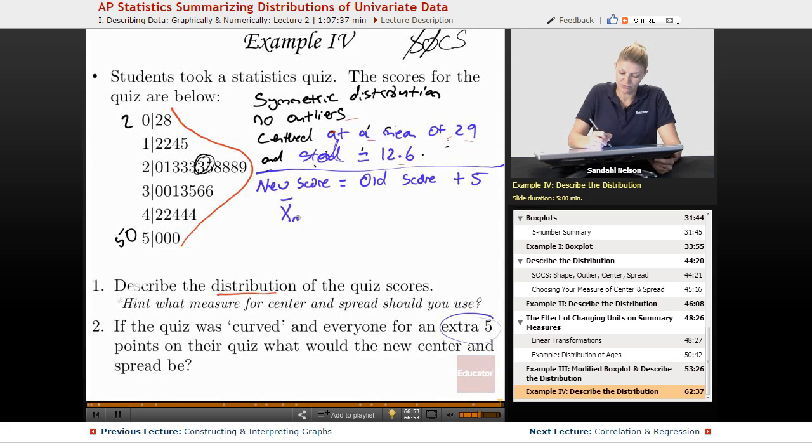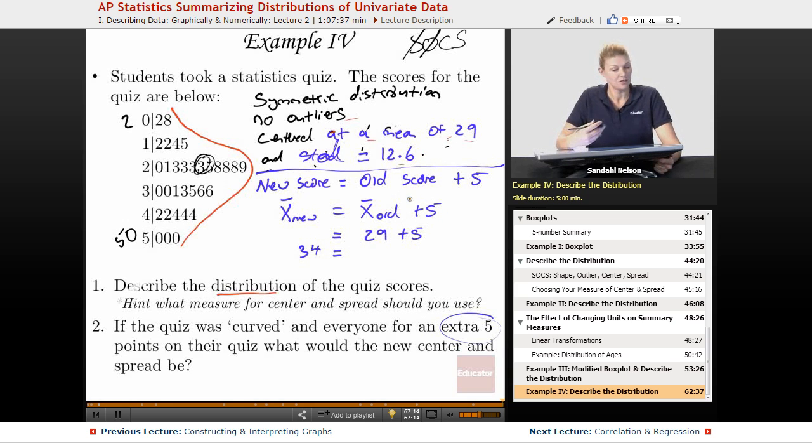So that means that the mean of the new score is just the mean of the old plus 5. So it's going to be 29 plus 5. The mean of the new score is going to be 34. What about the standard deviation? Well, notice that the only thing happening is something's being added. So the standard deviation does not change. The standard deviation of the new is just the same as the standard deviation of the old, so it's still 12.6. Our spread is the same, but everyone got a nice little bump because the quizzes were curved. So now the new mean is 34. Hope to see you for the next lesson.